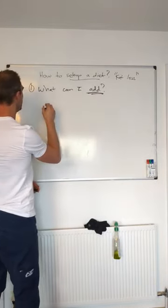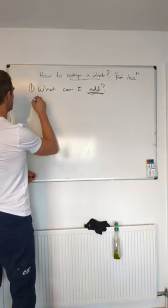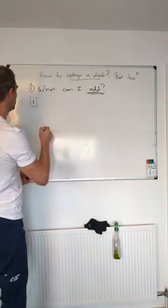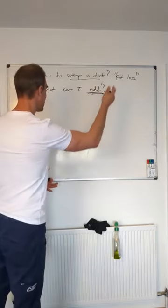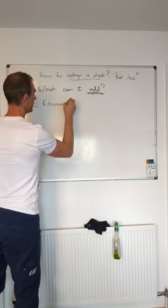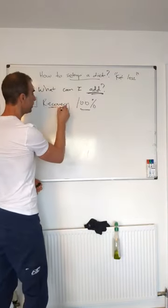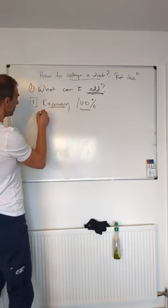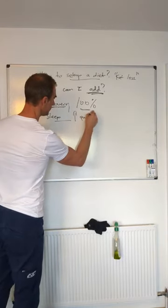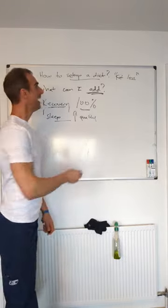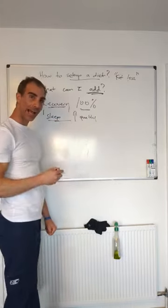So we're going to look at the scale of importance. Priority number one when creating a fat loss diet is recovery — how do we get recovery to be 100% at all times. This is absolutely what you should focus on when dieting. From that, we're looking at sleep — how do we improve the quality of sleep? This is your first place to start: figure out how to recover as much as you can and get your sleep as best as you can.